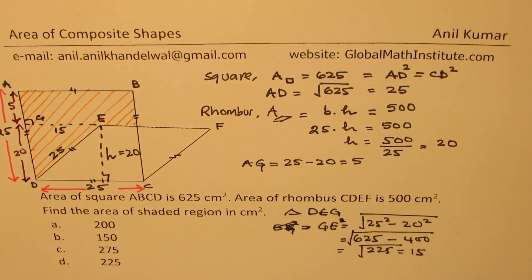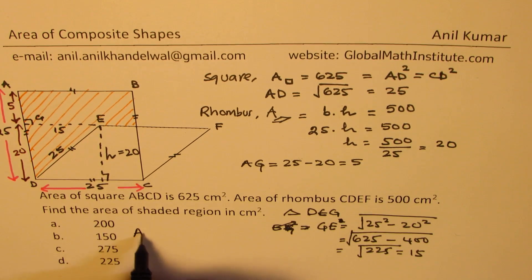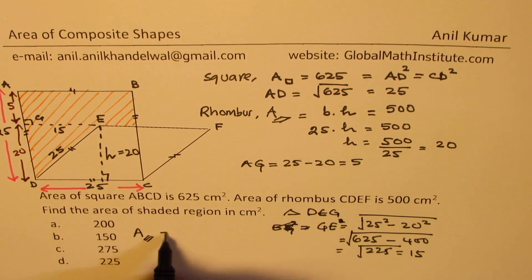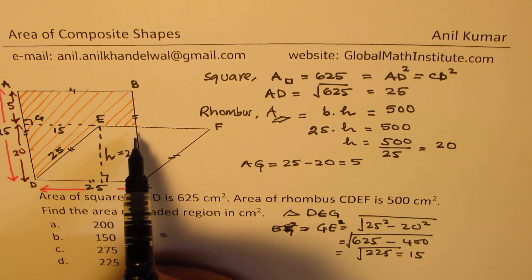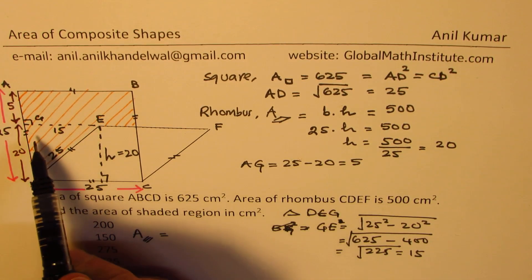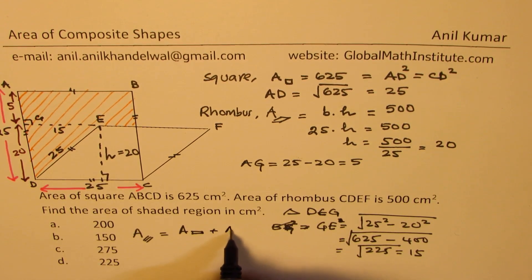Now, we can easily find the area of the shaded portion. So we can now write down that the area of the shaded portion is equal to the area of this rectangle and the triangle. So it's the area of small rectangle plus area of the triangle.